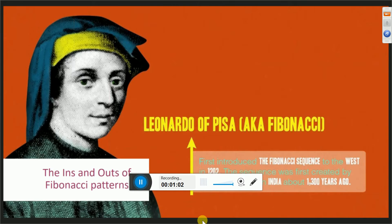Tonight is our first part of this two-part series. We're going to start learning about what the Fibonacci sequence is and the ways Fibonacci is used in trading, focusing mostly on Fibonacci retracements. Then, in our next class, we're going to learn to put them on real charts and use them in a trading system. But before we can put them into a system, we have to understand what we're looking at.